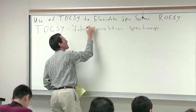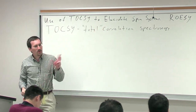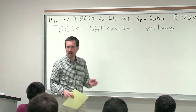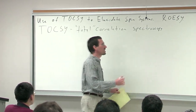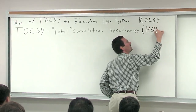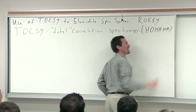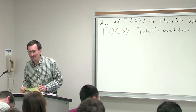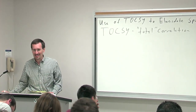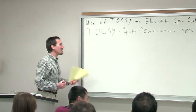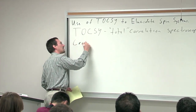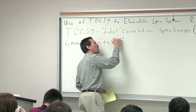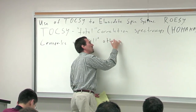I'll put 'total' in quotes because one doesn't get an infinite number of cross peaks. This technique was co-developed at the same time with another technique called HOHAHA — homonuclear Hartmann-Hahn spectroscopy. They're the same technique but TOCSY has taken over. The idea is that you get cross peaks with all — and again in quotes because there are limits — other spins in the spin system.